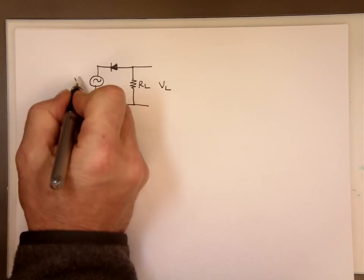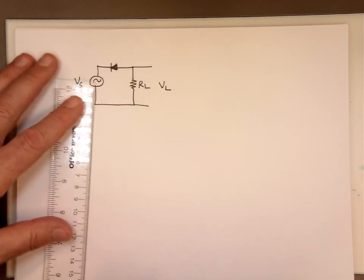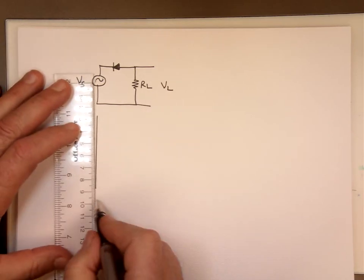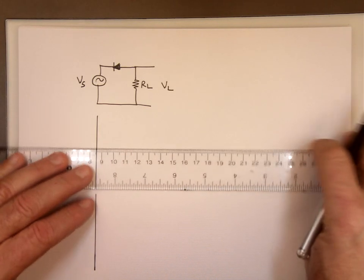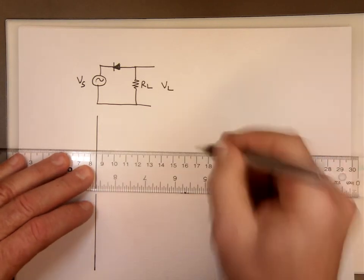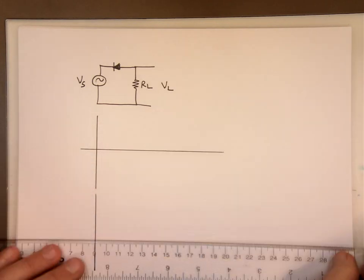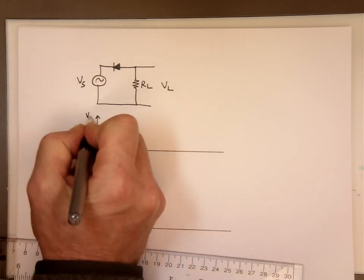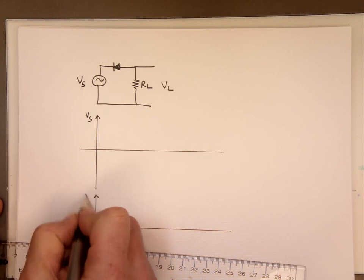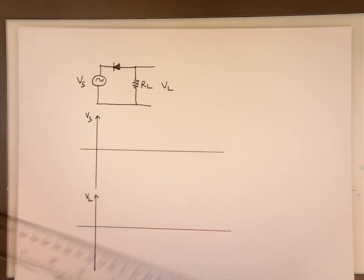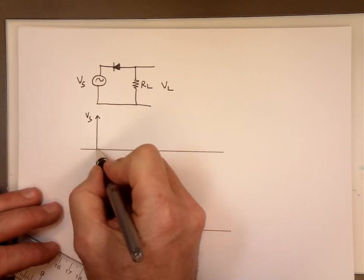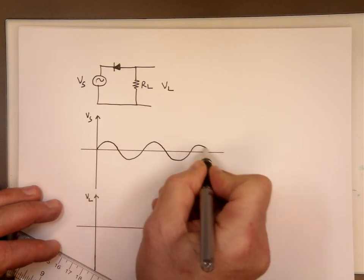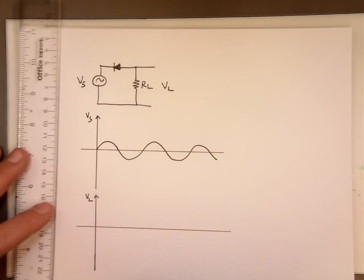And this is Vs here, the source. If you watch that using the same logic, I'll make it twice here. So this is Vs and this is VL. So if this is what your source looks like, I'll put a few of them here intentionally. So let's mark these.